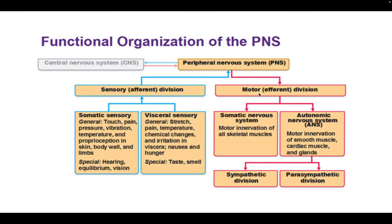I'd like us to think about the difference in the motor or efferent division leaving the central nervous system out to the peripheral division, because there's both the somatic — which is all of the skeletal muscles — as well as the autonomic, which is smooth muscles and cardiac. Autonomic is like automatic: this is the stuff that's somewhat out of our control.